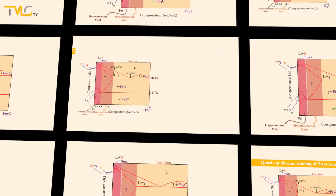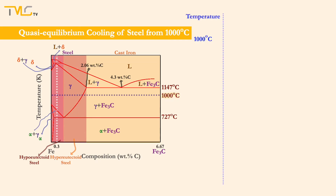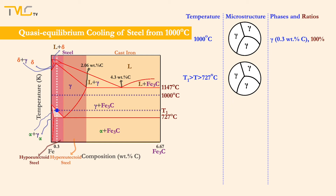Now let's focus on the quasi-equilibrium cooling of steel from 1000 degrees Celsius. We will discuss three different compositions belonging to hypoeutectoid, eutectoid, and hypereutectoid regions. Steel having 0.3 weight percent carbon at 1000 degrees Celsius falls in the hypoeutectoid region and only shows an austenite phase having 0.38 weight percent carbon. Upon cooling, the crystal structure does not change until reaching the T1 temperature, beyond which a two-phase region of ferrite and austenite begins. The ferrite phase nucleation starts preferentially at grain boundaries, and as cooling continues, the ratio of ferrite in this two-phase system increases.